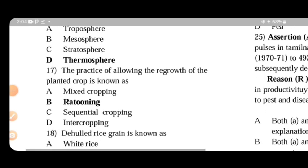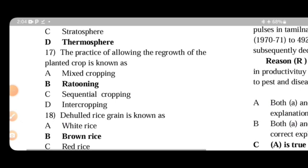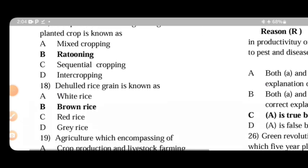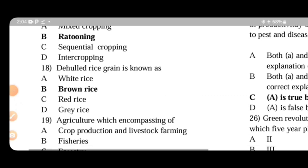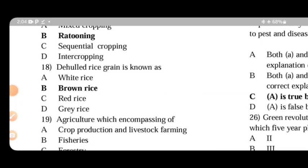The practice of allowing the regrowth of planted crop is known as ratooning. De-hulled rice grain with bran germ layer is known as brown rice.